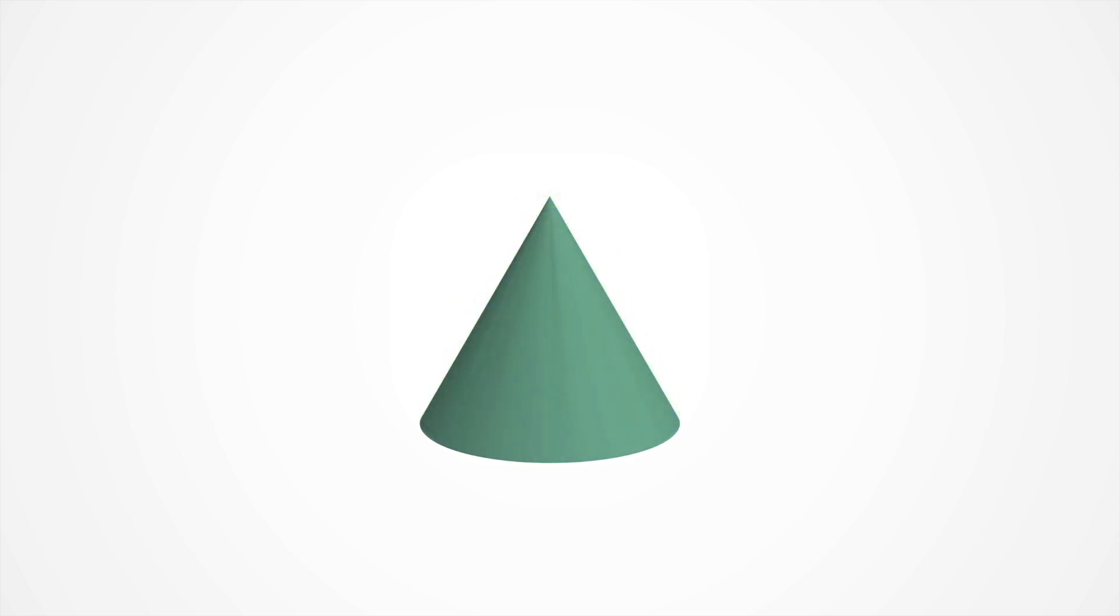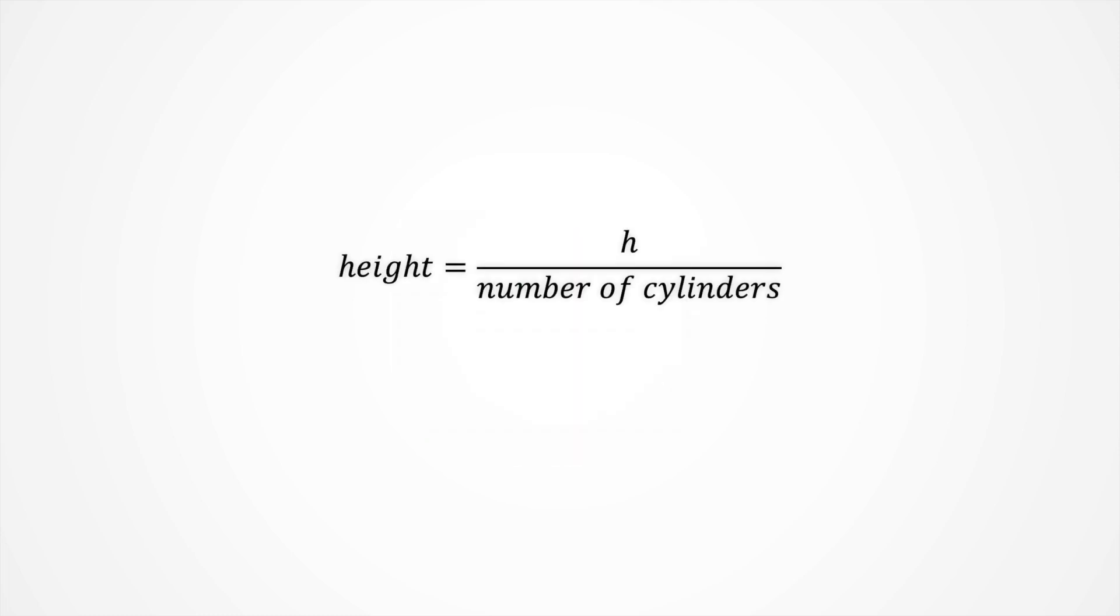To calculate this volume approximation, we need to know the volume of each cylinder, thus, we require their height, which is simply the cone's height divided by the number of cylinders and their radius, how do we get there?